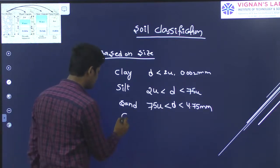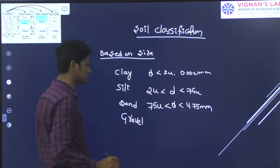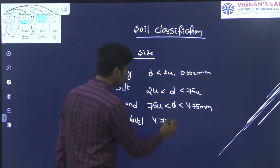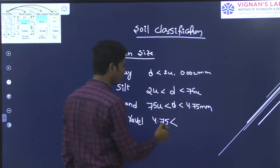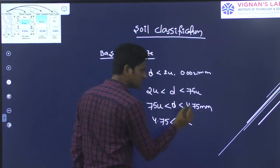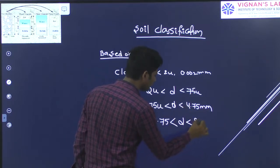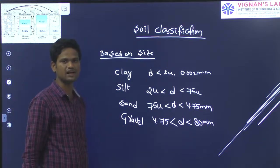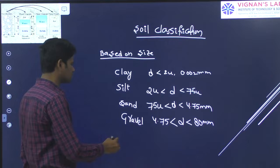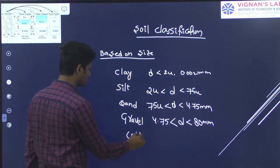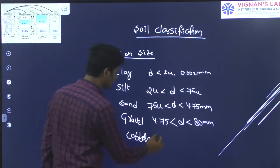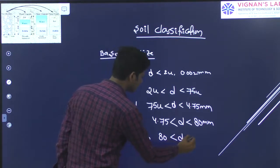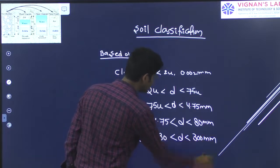Coming to gravel size: gravel materials have a size between 4.75 mm to 80 mm. That means particles greater than 4.75 mm and with a maximum range of 80 mm are called gravel. Next, we have one more type called cobbles. Cobbles have particles of size more than 80 mm and less than 300 mm in size.